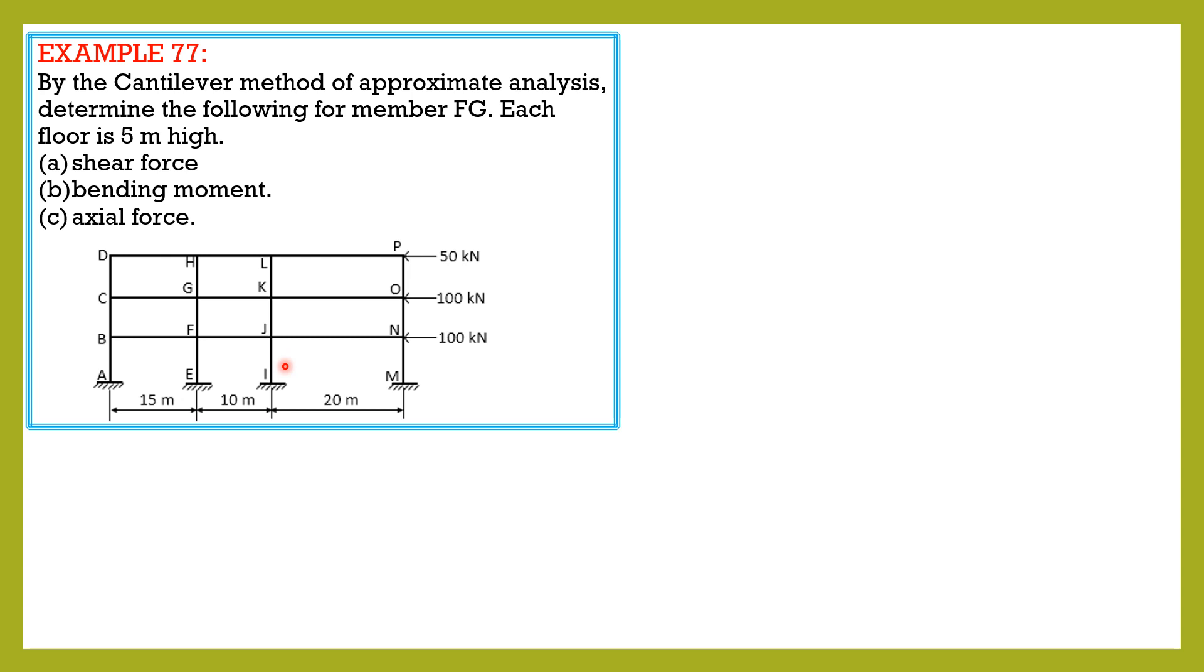This was solved by the portal method. This time let's solve this by the cantilever method. Since areas are not given, by principle its column area is shown to be 1. There are four columns, therefore area is 4 times XA to locate the neutral axis or centroid of column areas.